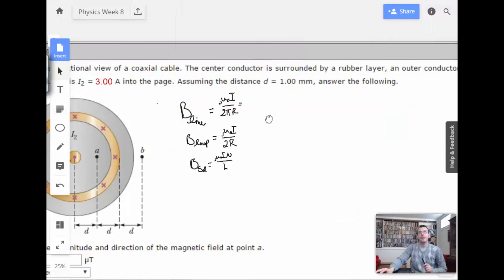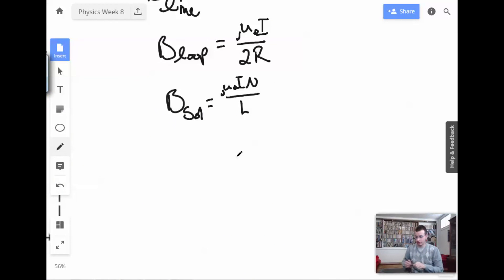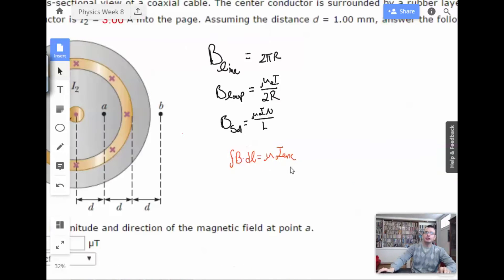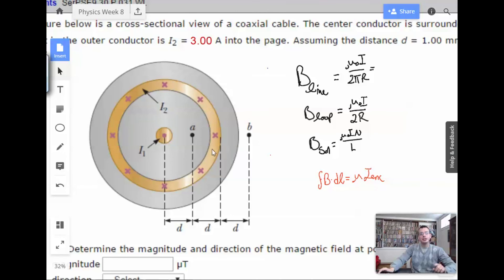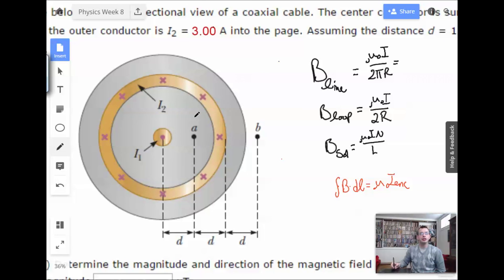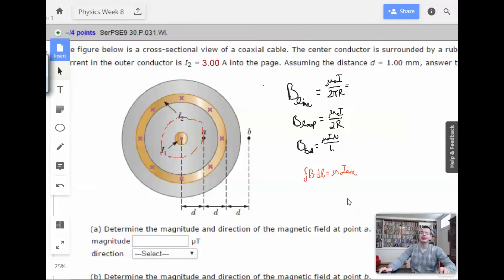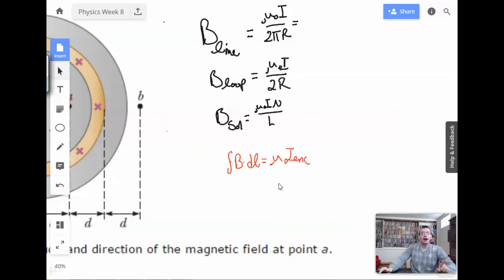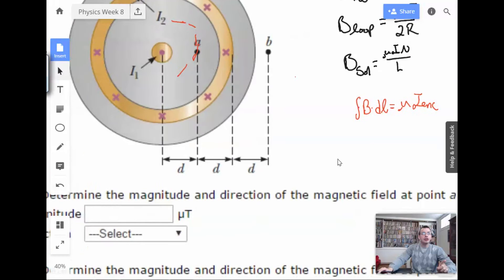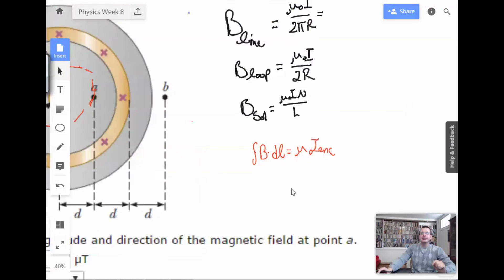So, go through this guy real quick. It's worth knowing in life. Integral B dot dl equals μ₀I enclosed. Very similar to Gauss's Law. So, the idea here is we're going to use this area right here. And it's supposed to be a circle.